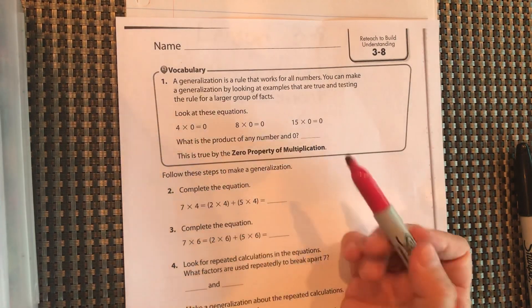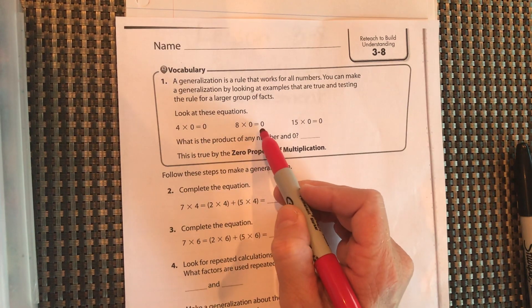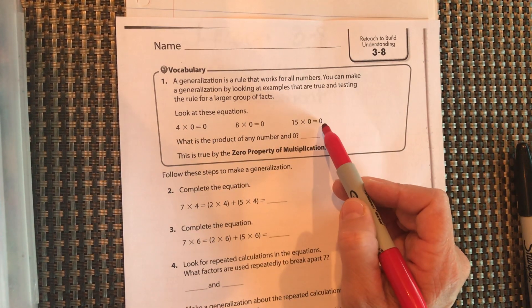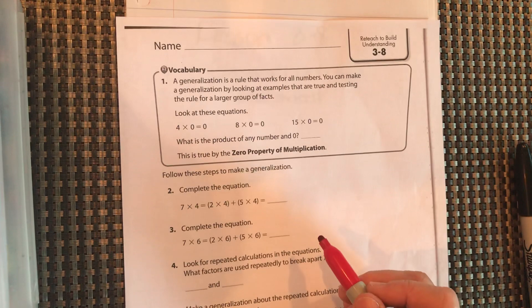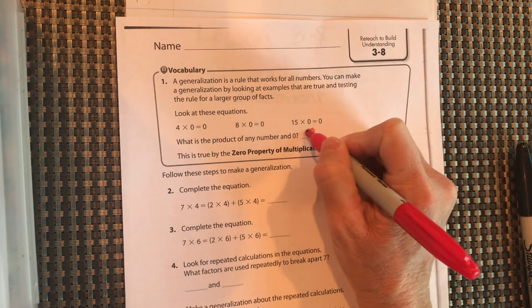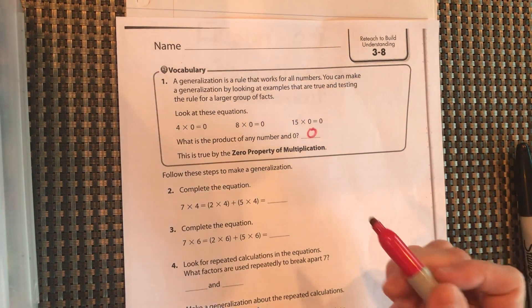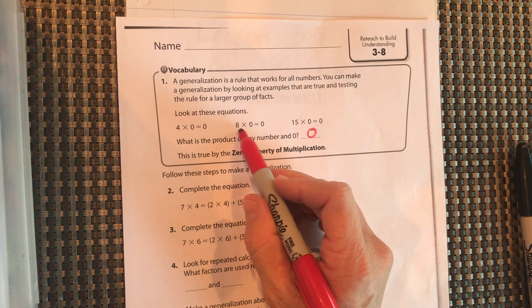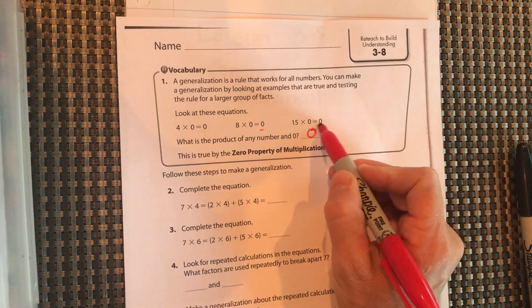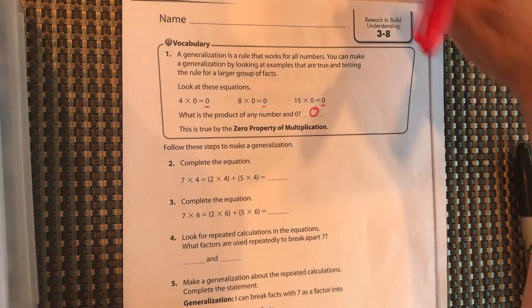So if you're looking at the top part, 4 times 0 equals 0, 8 times 0 equals 0, 15 times 0 equals 0. What is the product of any number and 0? Yes, it equals 0. So you can make a generalization or a statement that is true that any number times 0 equals 0. We think of 0 as the most powerful number in multiplication since it turns everything into 0.